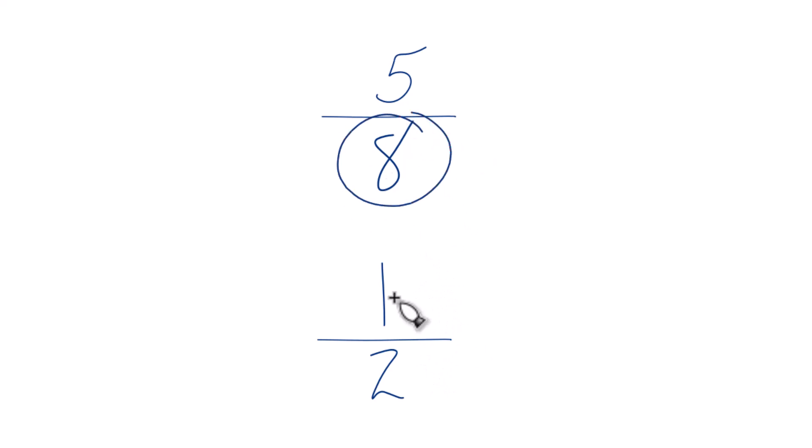Right now we have 8 and 2. But if we had a common denominator, then we just compare the numerators, and we'll know which fraction is greater, 5 eighths or 1 half.